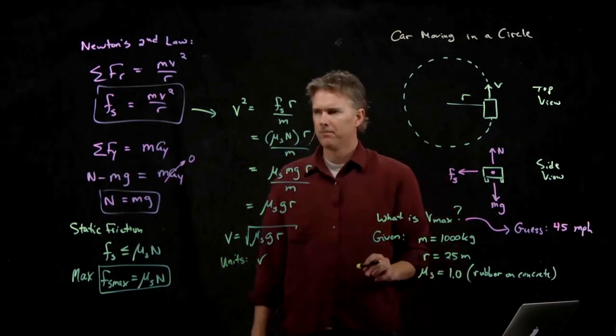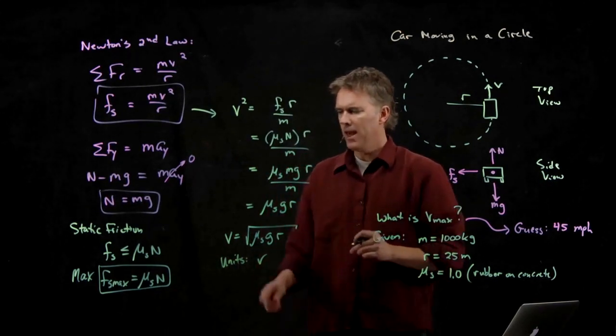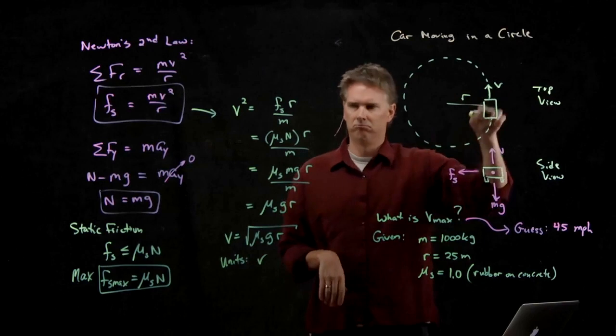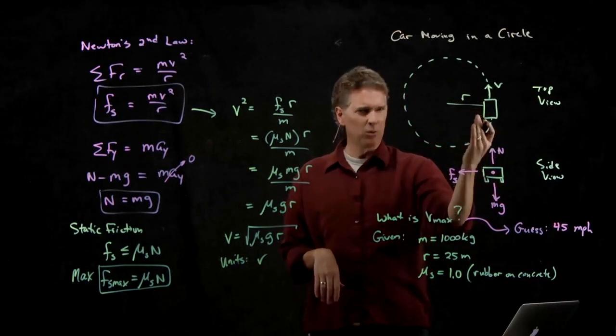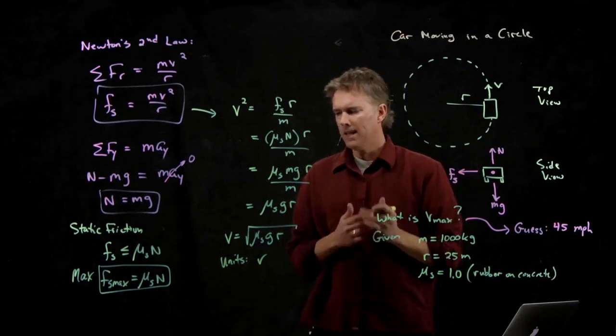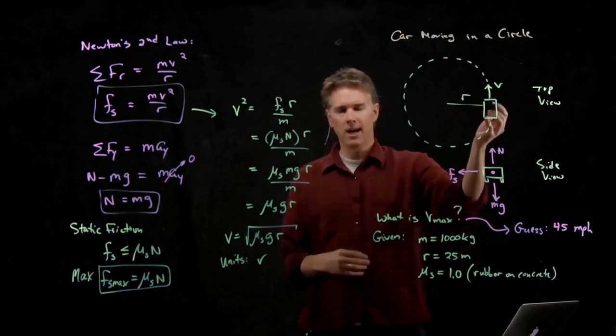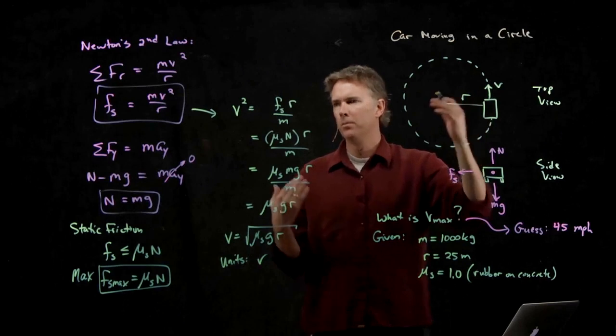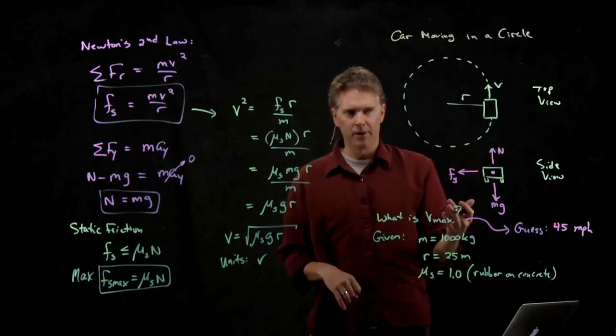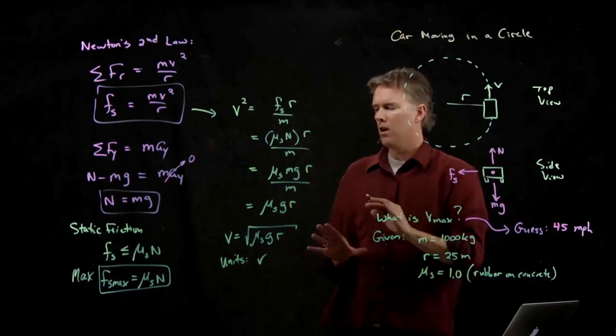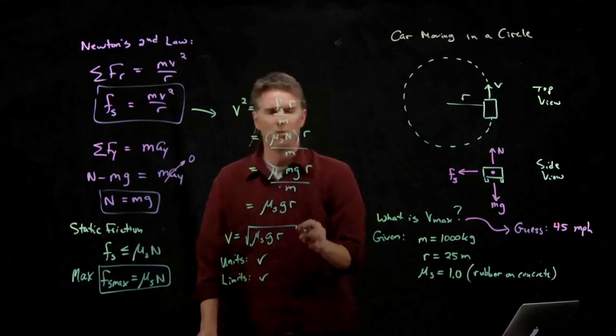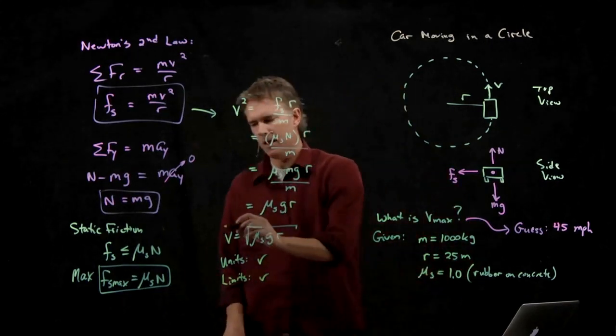What about the limits? Does it make sense to you that if mu s gets bigger, you can go around this circle faster? Yeah, because you're sticking to the road more. If you can stick to the road more, you can certainly go around faster. Likewise, if mu s goes way down like you're on ice, then the maximum speed would be smaller. And you know this. You can't drive around in a circle on ice nearly as fast as you can on dry cement. So all of those limits seem to make sense. And you can think about the other ones if you like, the radius and gravity, but I think you get the idea that it works out.